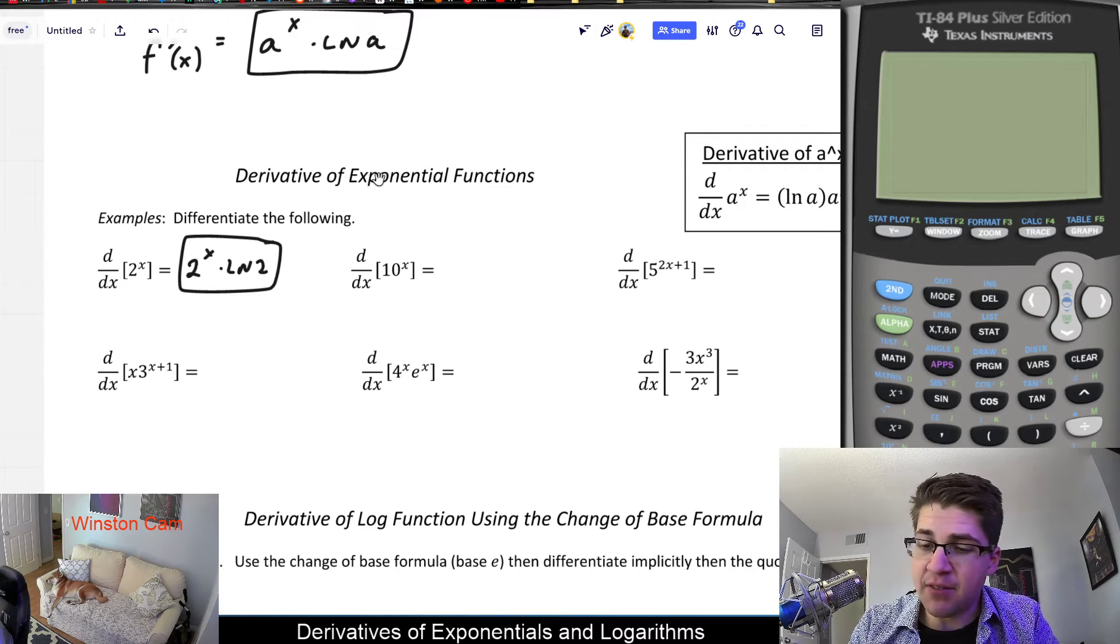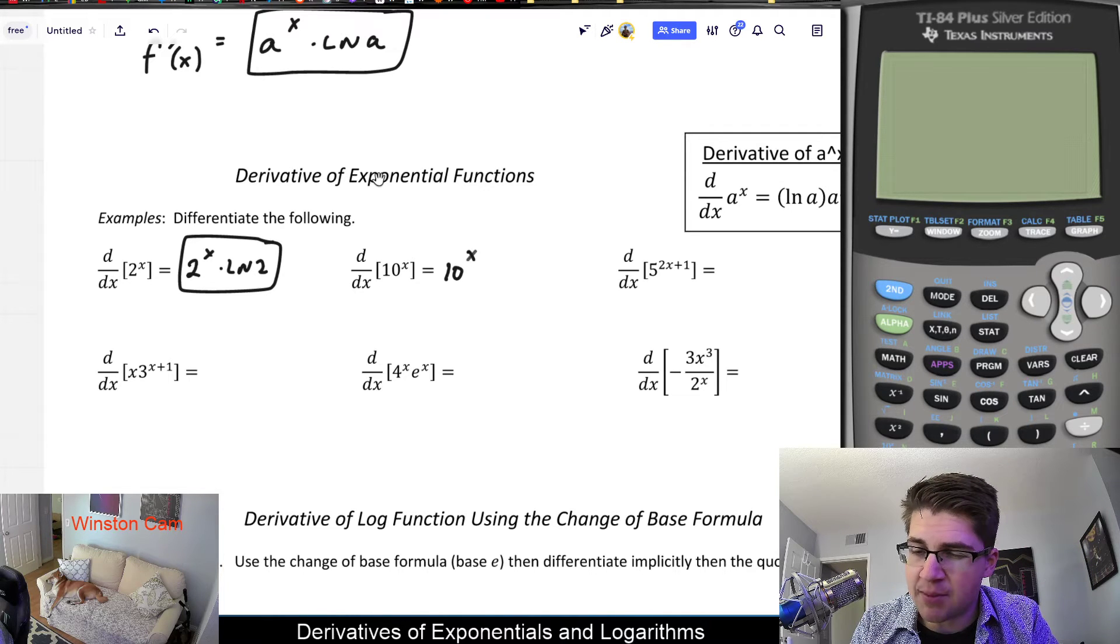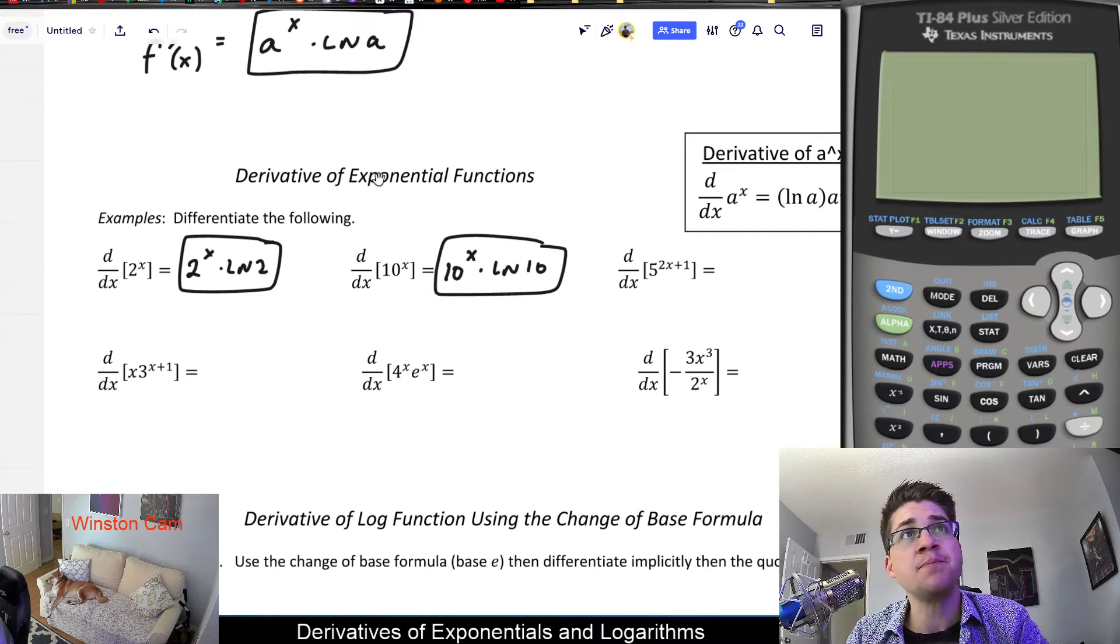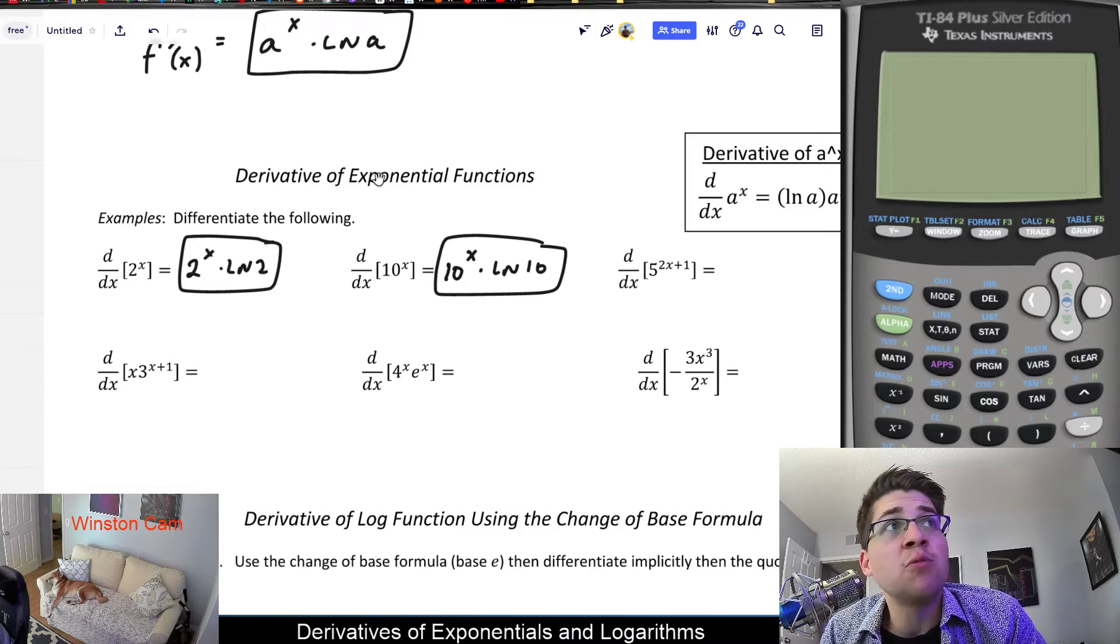And this is consistent with what we solved by the difference quotient in the prior video. And same thing as if I had 10 to the x. Well, it's derivative of 10 to the x multiplied by the natural log of 10. And so for any exponential function in general, we can just solve using the rule.